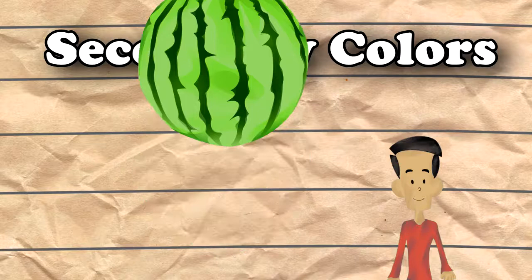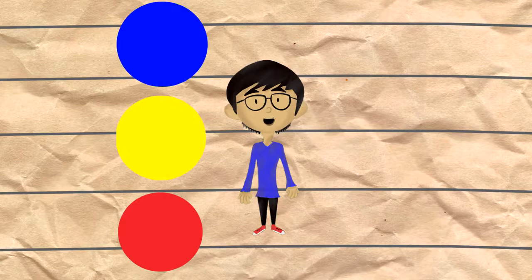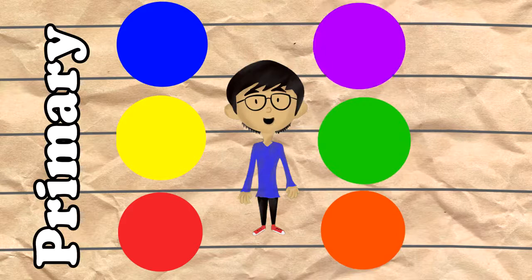That is all for our lesson today. We learned about primary colors and secondary colors. Red, yellow, and blue are primary colors, and orange, purple, and green are secondary colors.